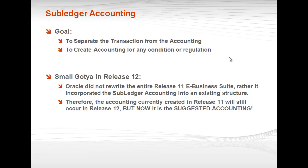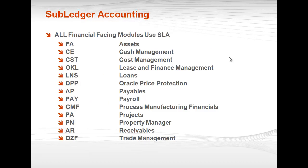There is a small gotcha in Release 12 against these goals — Oracle did not rewrite the entire Release 11 eBusiness Suite. Rather, it incorporated subledger accounting into the existing structure. What that means is that the current accounting you would normally create in Release 11 is still going to occur in Release 12, but now that is going to be the suggested accounting. All financial-facing modules will use subledger accounting — and a lot of you may say you don't use subledger accounting, but you do. You will use it, but you may not necessarily use a secondary ledger, a currency ledger, or create your own custom rules.